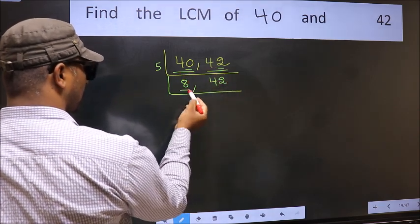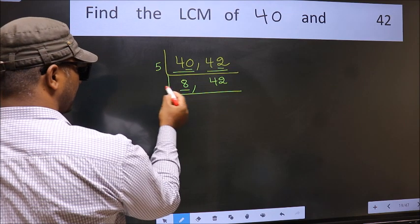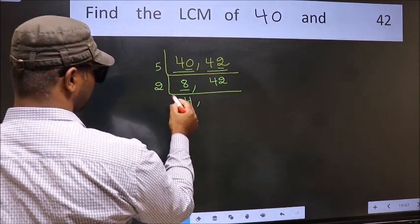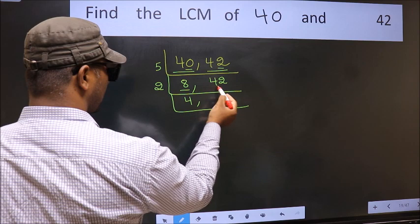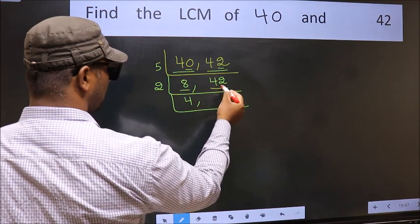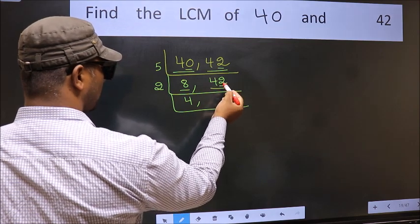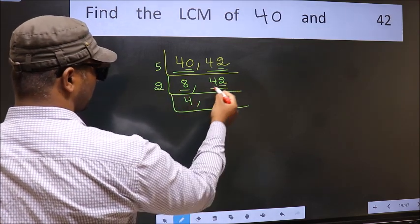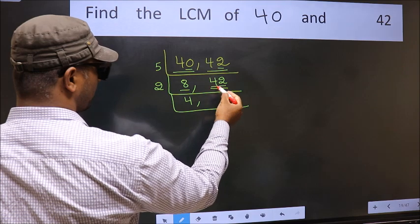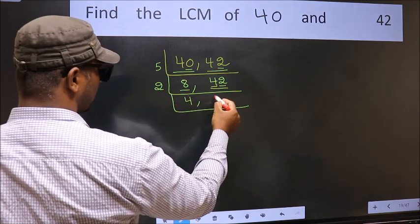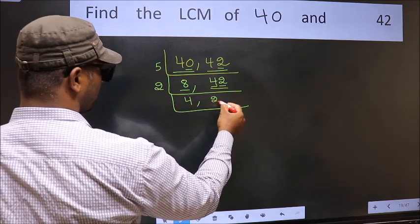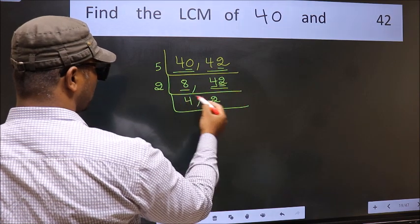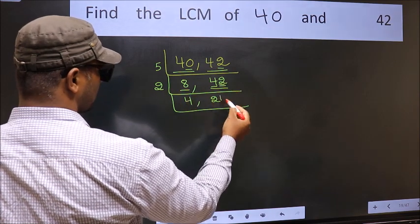Now here we have 8. 8 is 2 fours — so divide by 2. The other number, 42, last digit is 2, which is even, so this is divisible by 2. For the first number, 4: when do we get 4 in the 2 table? 2 times 2 is 4. The other number, 2: when do we get 2 in the 2 table? 2 times 1 is 2.